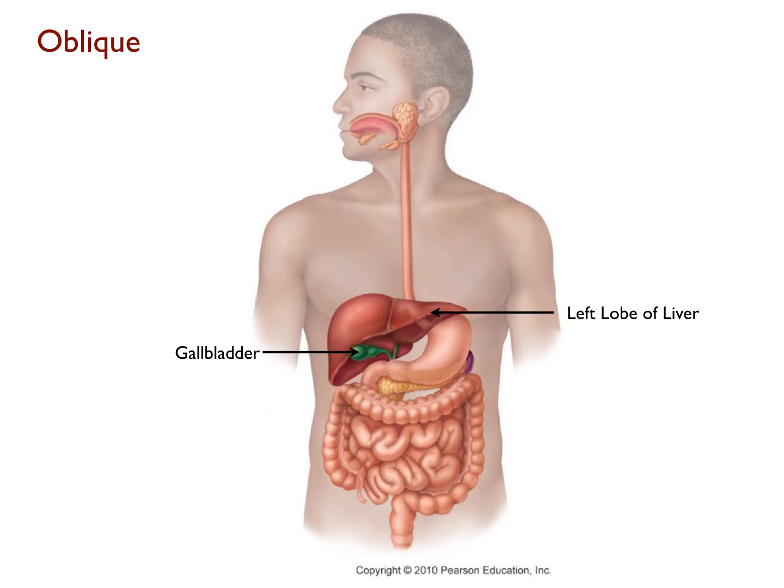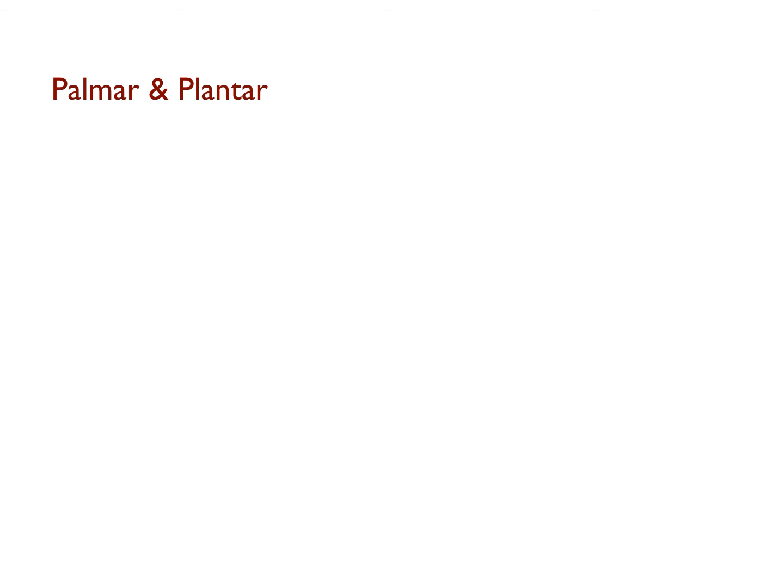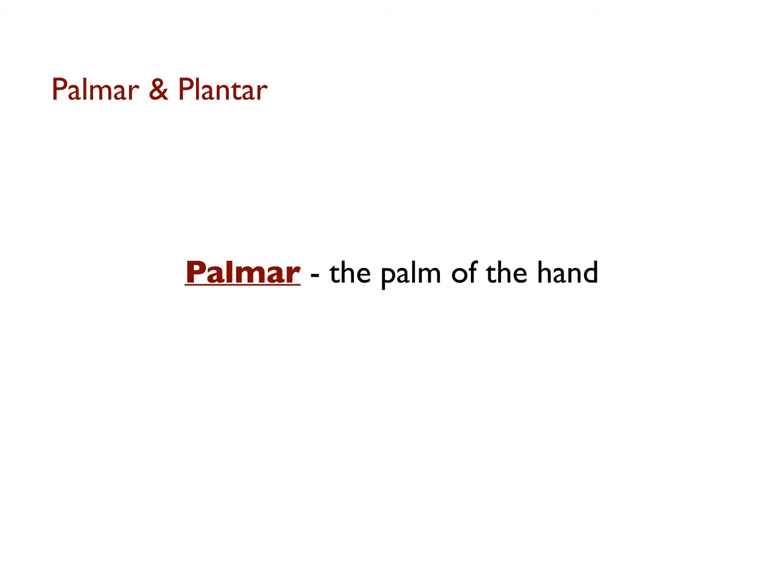The next term on the list, palmar, refers to the palm surface of the hand, and the term plantar refers to the sole of the foot. Remember that in anatomical position, the palm of the hand is on the anterior surface of the body, and the plantar surface of the foot is on the ground.